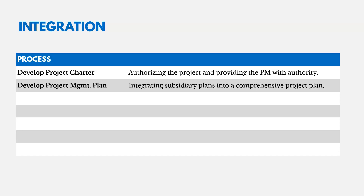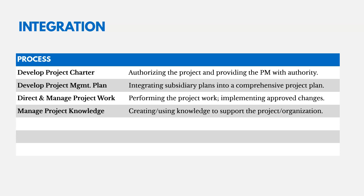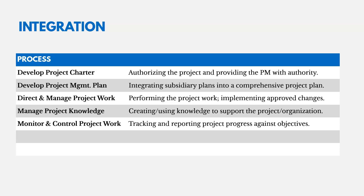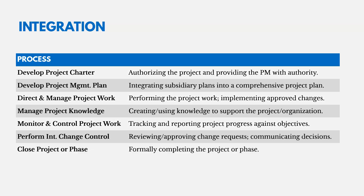Developing the project management plan combines all subsidiary plans — the cost management plan, quality management plan, scope management plan, and others. We then direct and manage project work, performing the work and implementing approved changes. We manage project knowledge by capturing lessons learned for current and future projects. We monitor and control project work to track and report on progress. We perform integrated change control to review and approve change requests. Finally, we close the project or phase, formally completing the work.